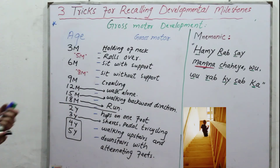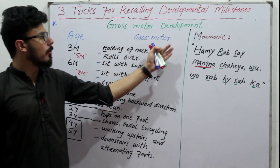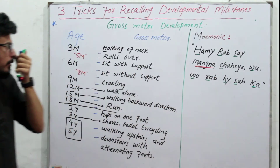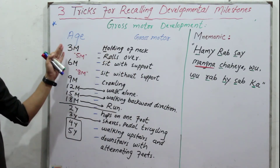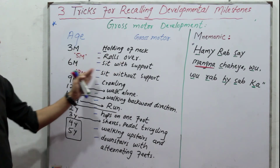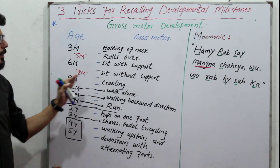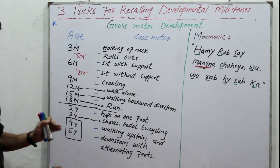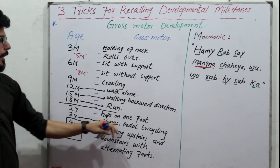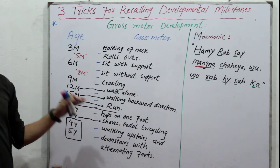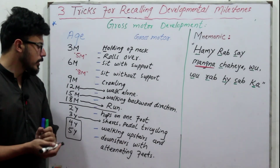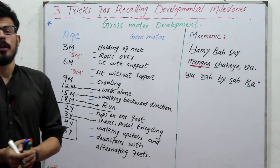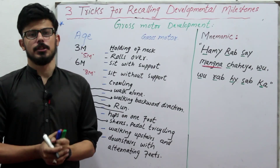This is how you can easily pin down gross motor activities by memorizing the mnemonic sentence. To repeat: three months — holding neck, five months — rolls over, six months — sit with support, eight months — sit without support, nine months — crawling, twelve months — walking alone, fifteen months — walking backward, eighteen months — running, two years — hops on one foot, three years — shears and pedal tricycling, four and five years — walking upstairs and downstairs with alternating feet. I hope this video helps. Please drop your comments if you have any queries. Thank you.